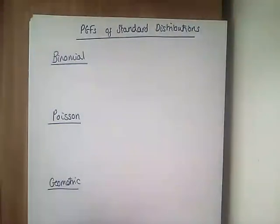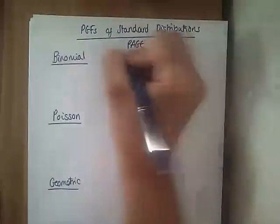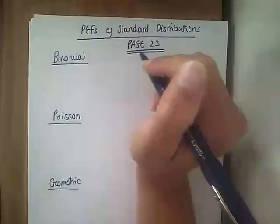Now, these are given to you in your formula book on page 23, and I would always have that open so that you know what you're aiming for.